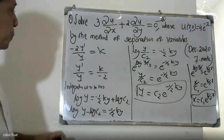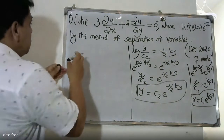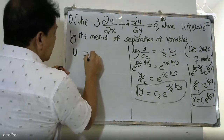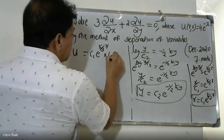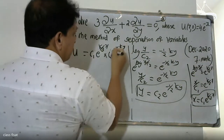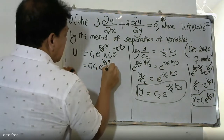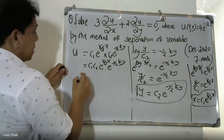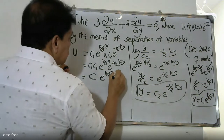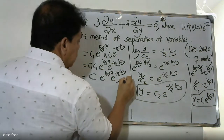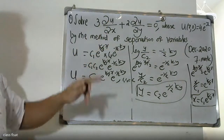Therefore Y = c2·e^(−k/2·y). We can write the general solution u = X·Y = c1·e^(k/3·x) · c2·e^(−1/2·ky). Combining constants c1·c2 = c, this becomes u = c·e^(k/3·x)·e^(−1/2·ky). Now we apply the boundary condition.